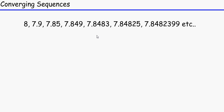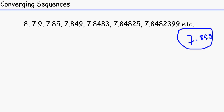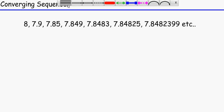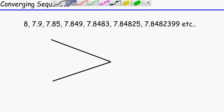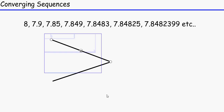It's actually coming closer and closer to a certain number. Let's just say it's getting closer to 7.845. It looks as though it's actually getting closer to this number — it looks like it's not going to get any further than this. And that's what we call converging, because if you remember converging mirrors from triple science, they would end up at one distinct point.